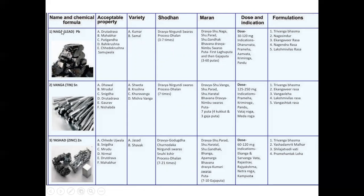Now about Naga Marana — incineration of Lead. The dravyas used are Shuddhanaga, Shuddhaparada, and Shuddhagandhaga. The Bhavana Dravya is Nimbu Swarasa. We then give Putas: first Laguputa, then Gajaputa — 3 to 60 Putas are given for the Naga Bhasma Marana process. These Putas are Agni Sanskaras, and as a result the Bhasma becomes very potent; raw toxic properties do not remain in the final Bhasma.